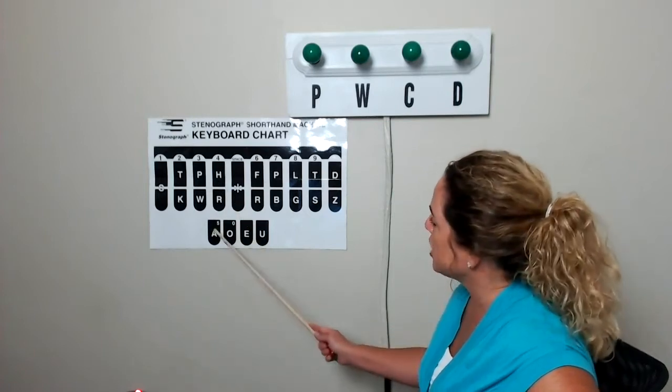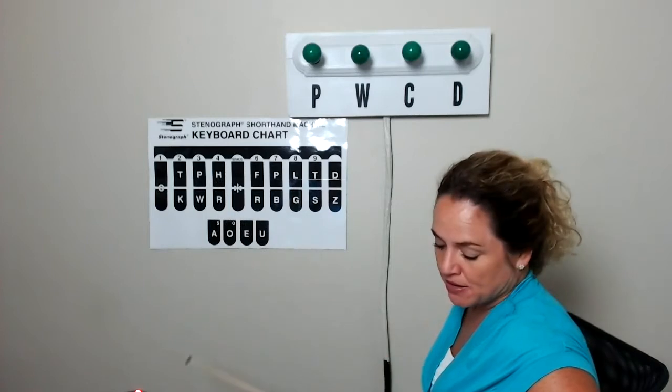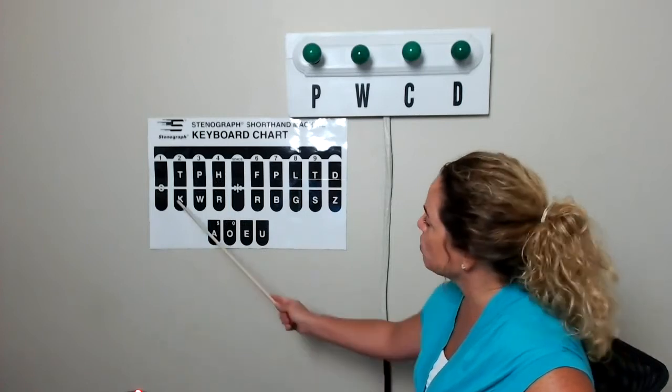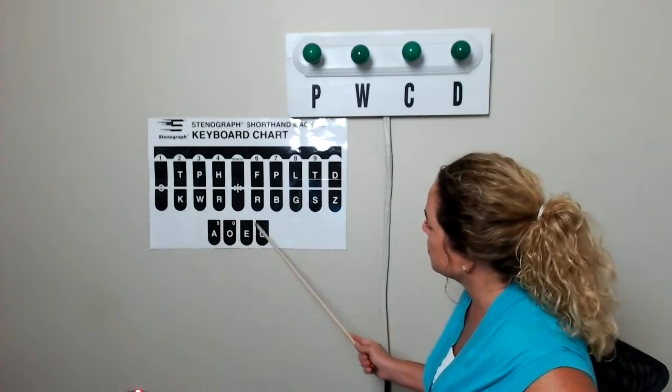Number 14, health. H, A, E, L, T. Number 15 is quirk. K, W, short I, R, K.